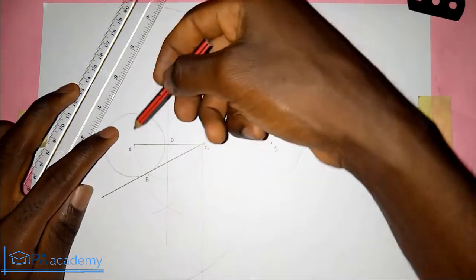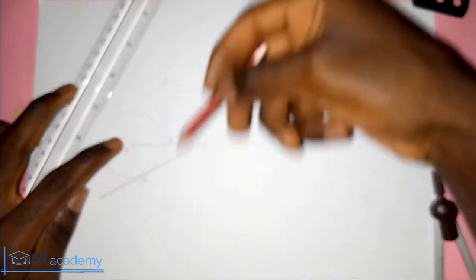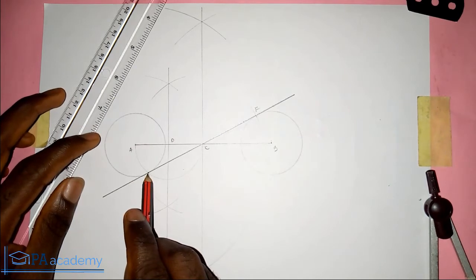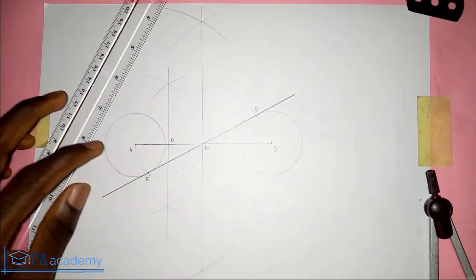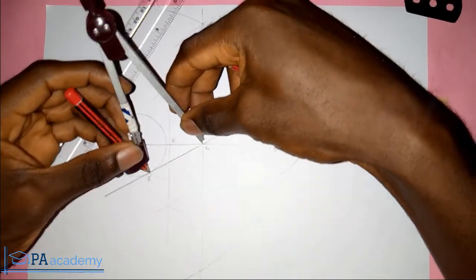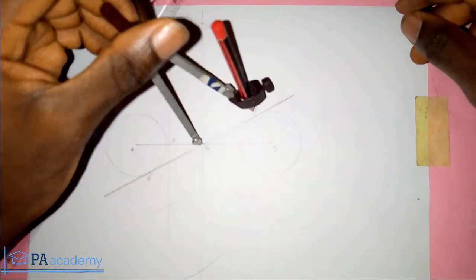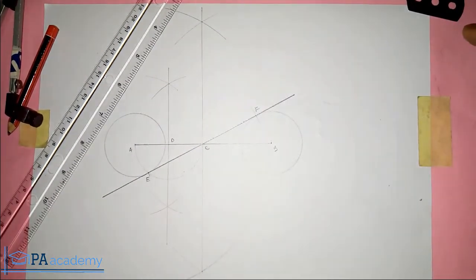To get the semicircle, you also have to bisect the line from point A to point C. When you draw the semicircle, where it touches the circumference of the first circle is point E. Pick your compass and measure from point C to point E. With the same length mark it on the second circle to get point F. Join those points and that gives you the common internal tangent.